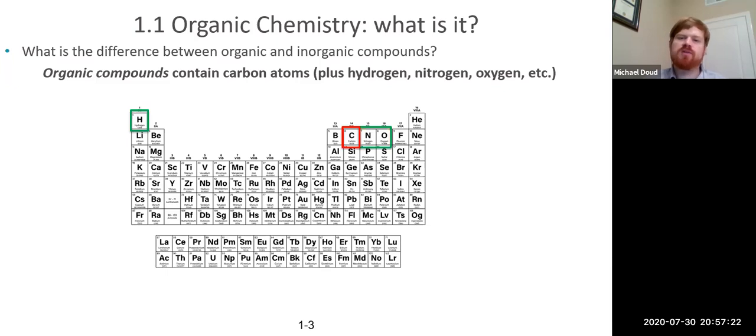Now that's not to say that we're going to ignore entirely the rest of the periodic table. We're going to be using phosphorus, sulfur, fluorine, chlorine - all the halogens show up eventually in the semester. But for now, just kind of laying out our definitions, the compounds we're going to study contain carbon. And that's the main thing.